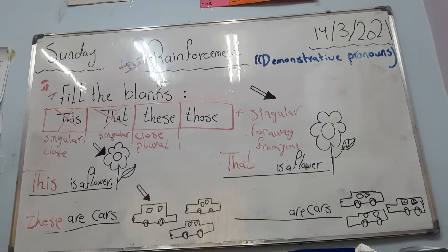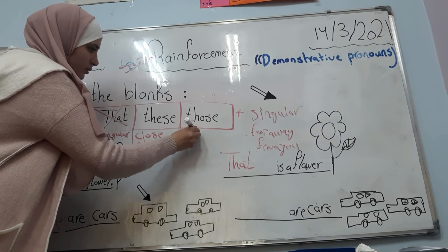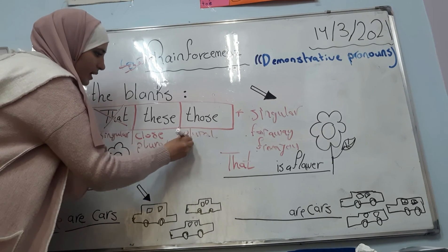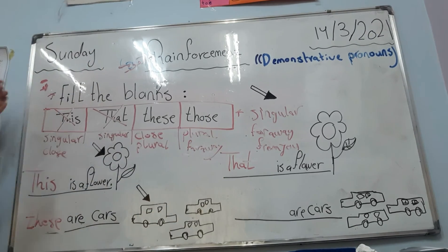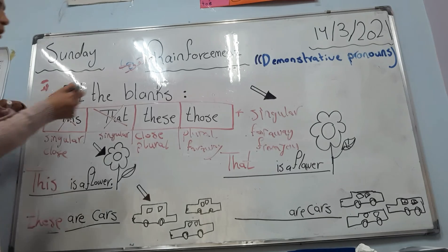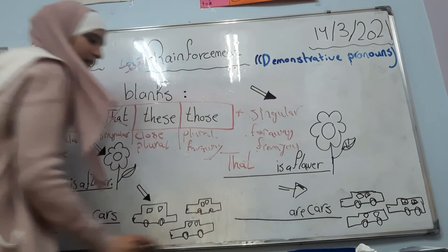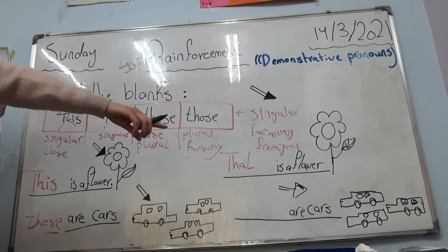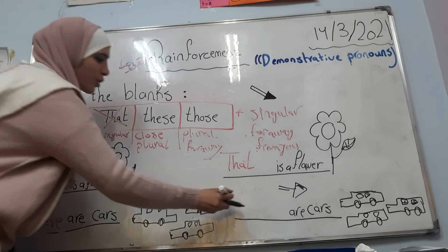The last word today: we have 'those'. We use 'those' for plural and far away — far away from you. So if I'm standing here and I can see some cars over there, what do I say? I use 'those'. We use 'those'.